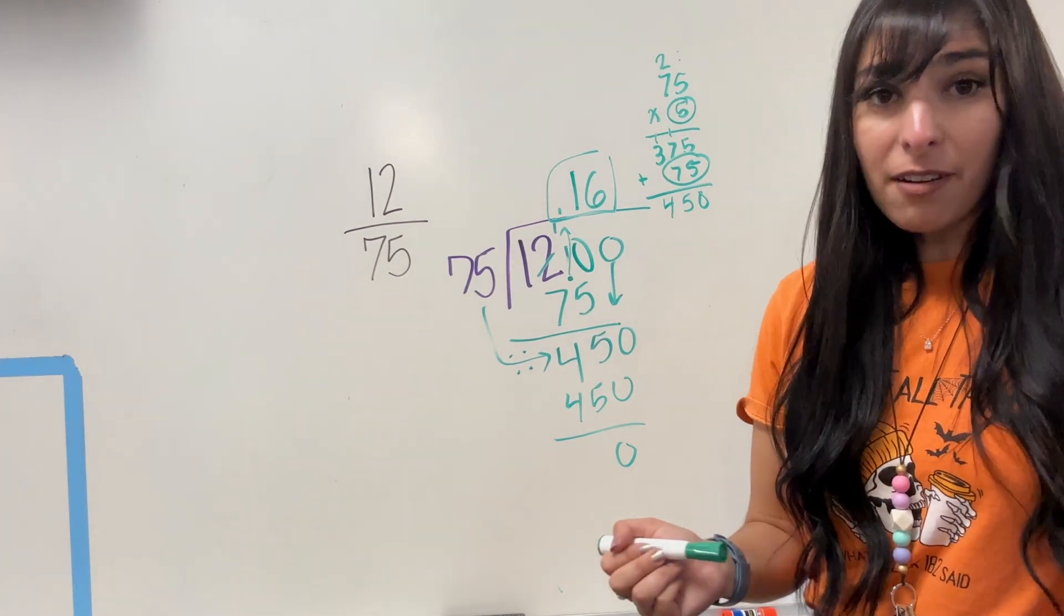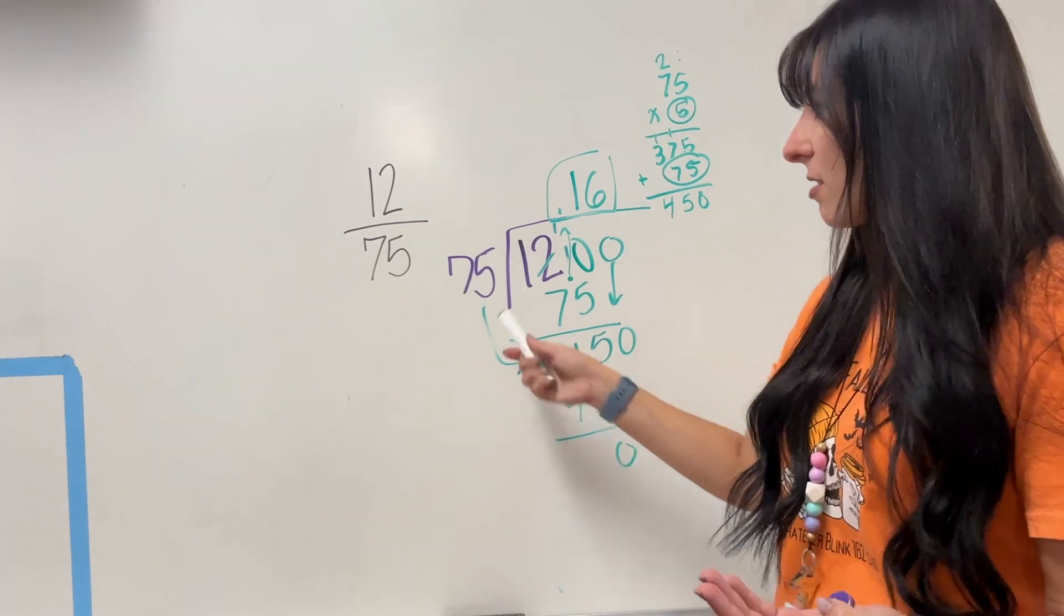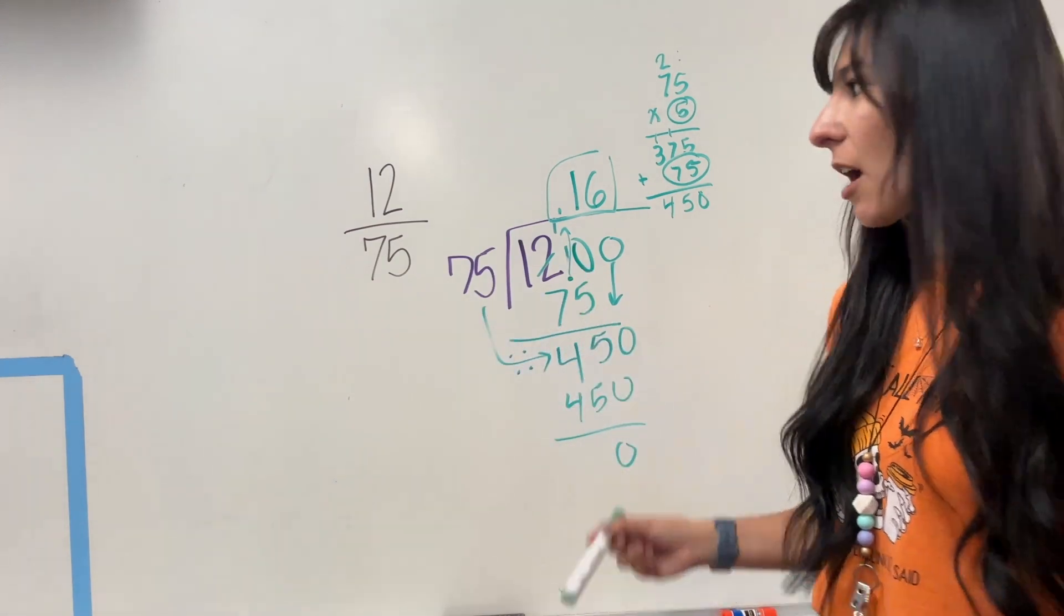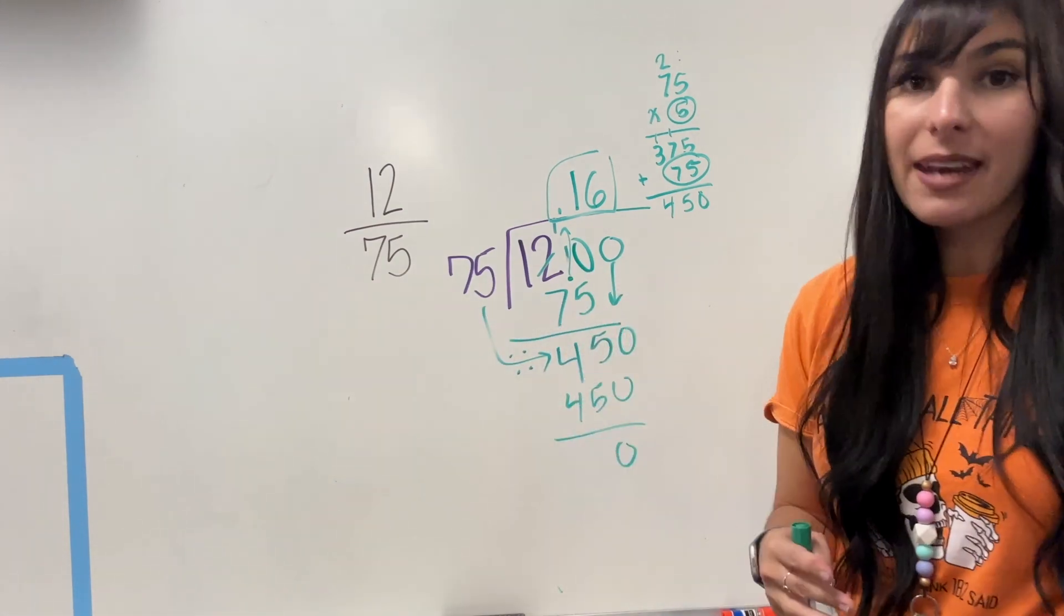Now, if you have a calculator, super easy. Just divide the numerator by the denominator. Otherwise, you will have to work this out by just adding a decimal, and you're going to keep adding 0s.